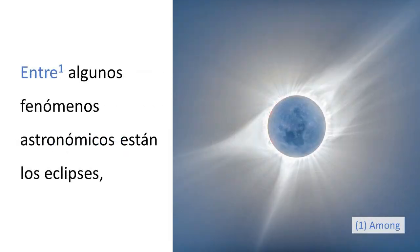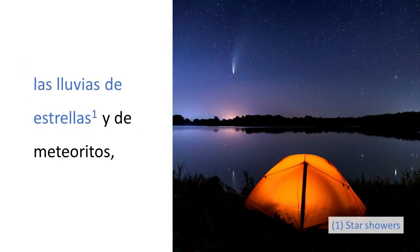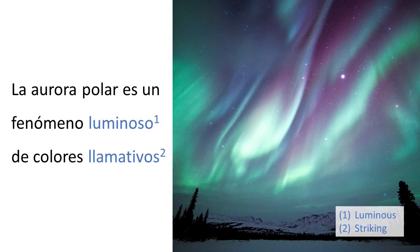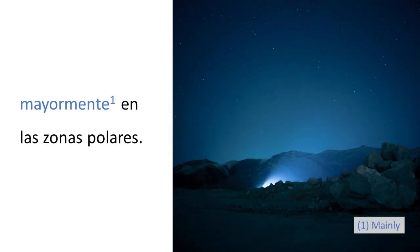Entre algunos fenómenos astronómicos están los eclipses, las lluvias de estrellas y de meteoritos, y uno de los más asombrosos de todos, la aurora polar. La aurora polar es un fenómeno luminoso de colores llamativos que se presenta durante la noche en el cielo, mayormente en las zonas polares.